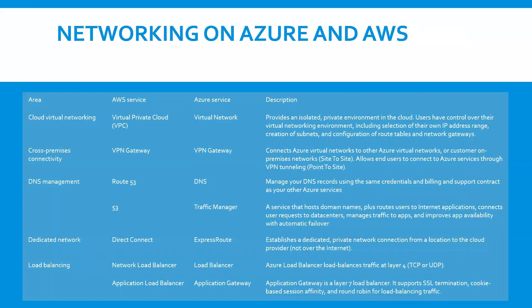Let's talk about Direct Connect in AWS and Azure ExpressRoute. Microsoft Azure provides similar site-to-site dedicated connections through its ExpressRoute service, while AWS uses Direct Connect. These connections do not travel over the internet. ExpressRoute allows you to connect your local network directly to Azure resources using a dedicated private network connection. Azure also offers more conventional site-to-site VPN connections at a lower cost.